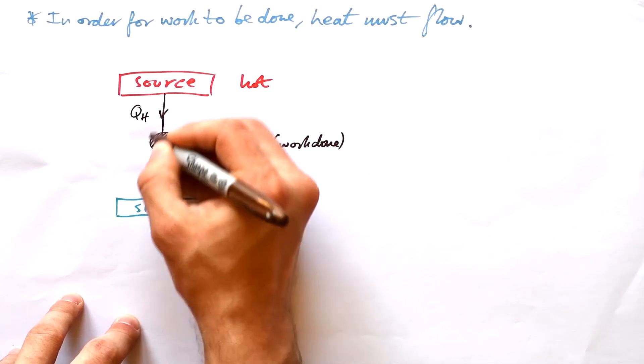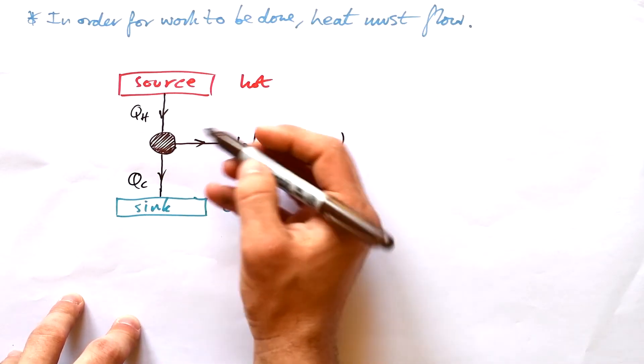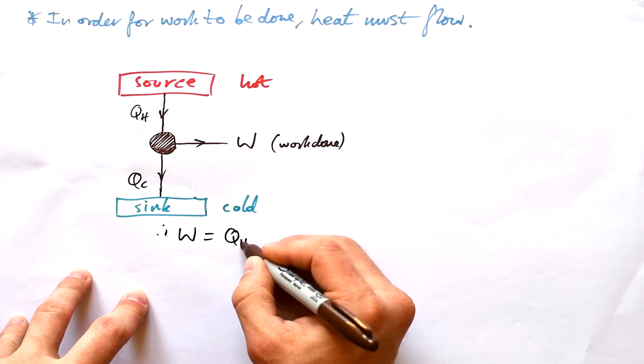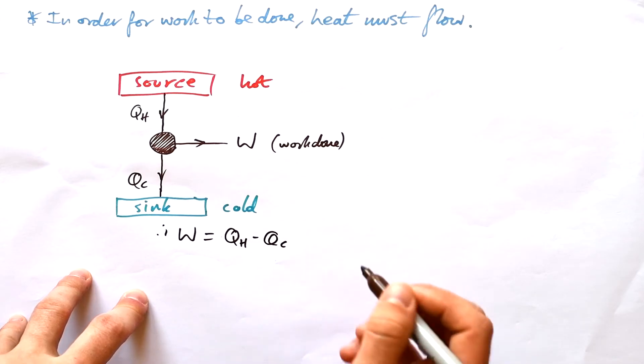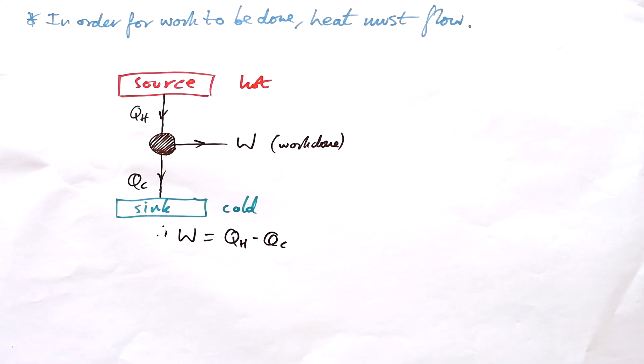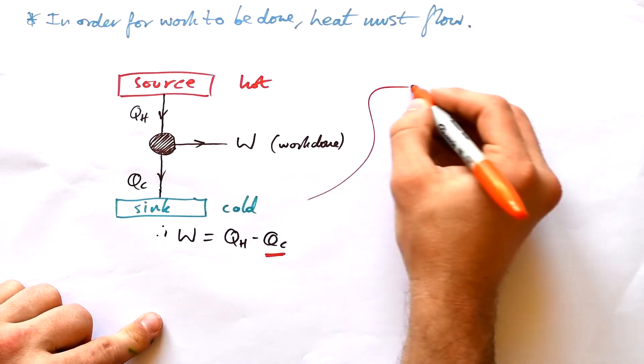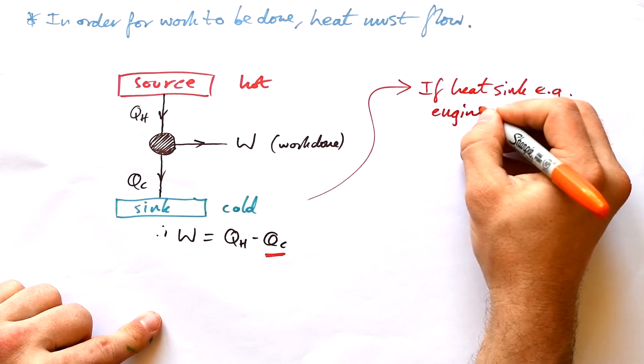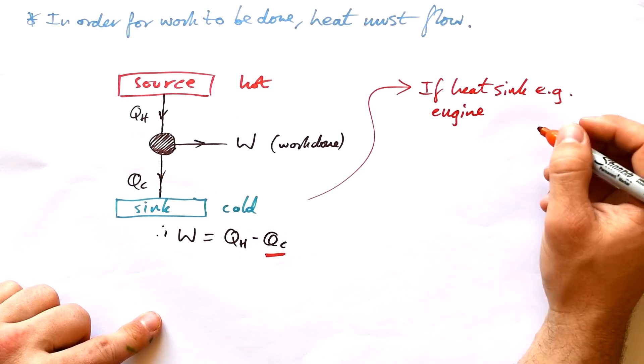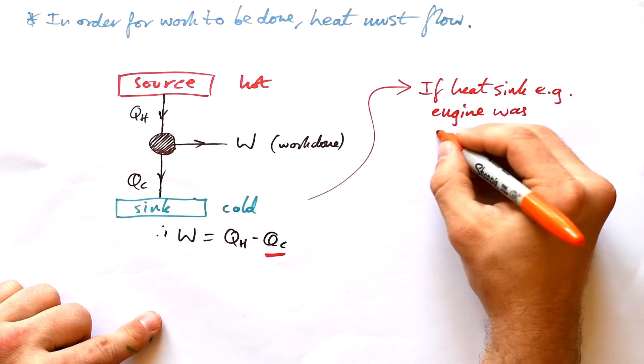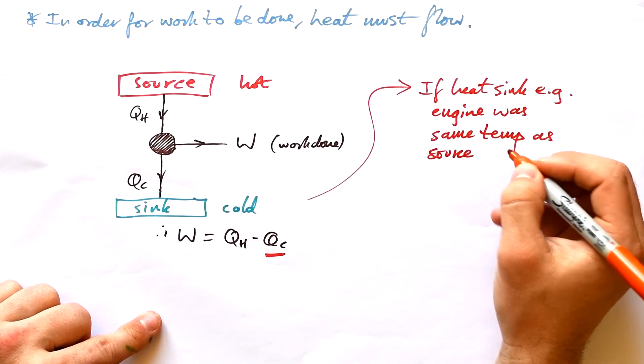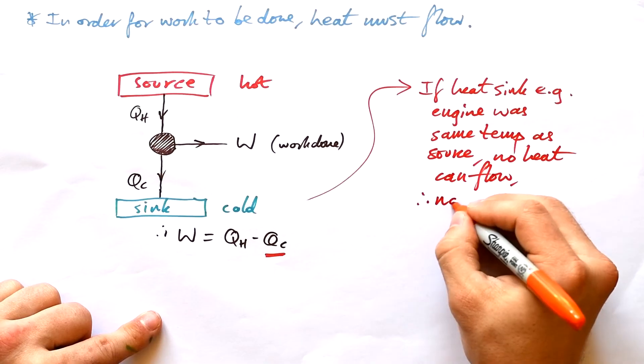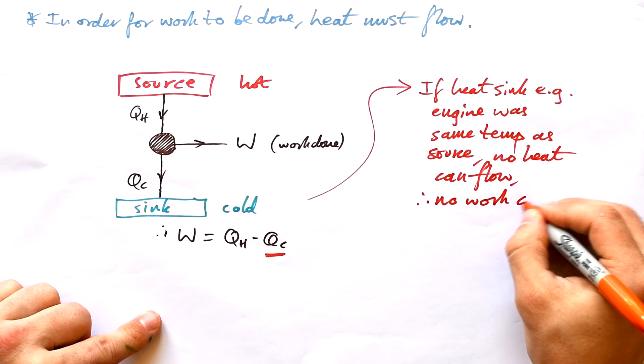We can't have all of our heat going to the work done because it's never going to be 100% efficient. Let's call this QH. Let's call this QC. And so therefore, we can see that the work done is going to be the heat going in, take away the heat coming out. Now, this always has to be true. Now, here's the rub. If this heat sink, and we can say, eg the engine itself, you know, the block, the cylinder, the pistons, the heat sink was same temp as the source, that would be the fuel, no heat could flow. Therefore, no work can be done.